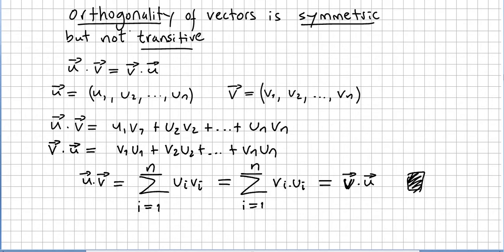So we just proved that orthogonal vectors are symmetric. If u is orthogonal to v, v is orthogonal to u. Now we are asked to show that orthogonality is not transitive.